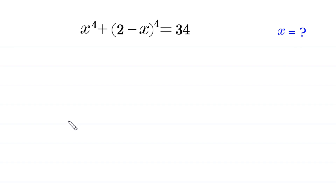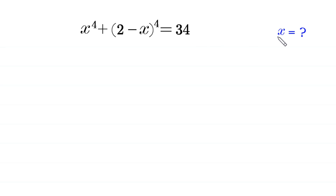Hello, welcome to how to solve this very nice algebra equation: x to the power 4 plus (2 minus x) whole to the power 4 is equal to 34. We need to find all possible values of x.